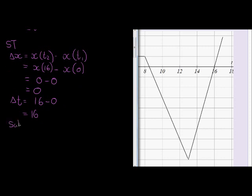So if I now just go and substitute in my sub step, I find that my velocity, average velocity, is 0 over 16, and that when I solve it will just give me 0 meters per second.